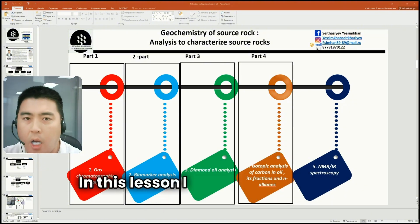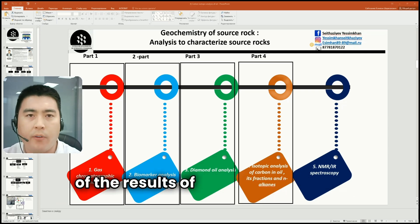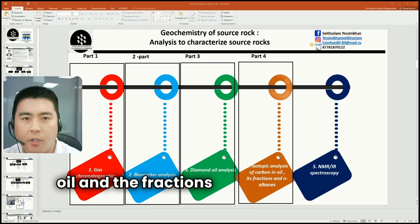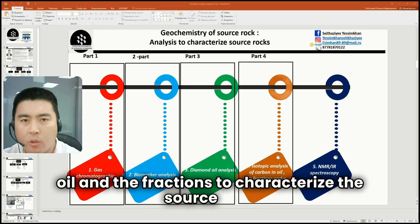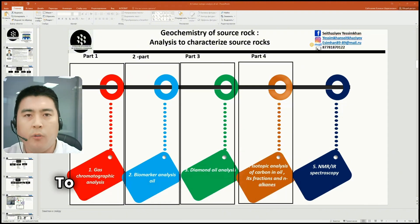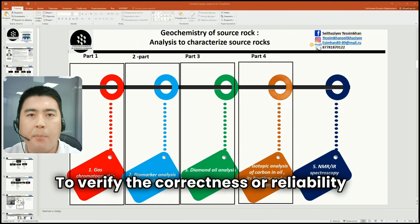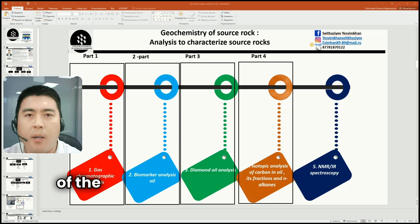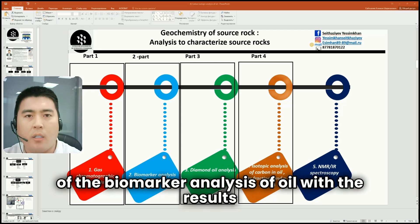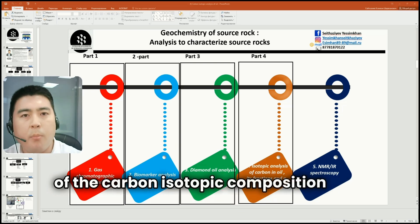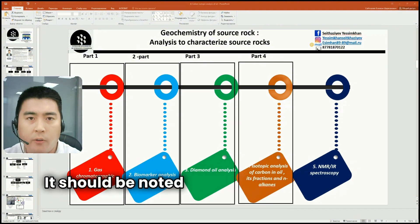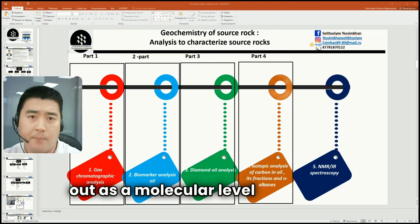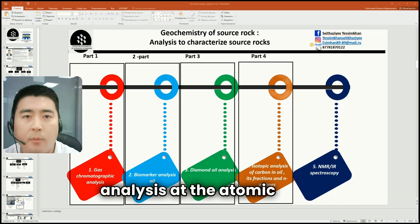In this lesson, I will explain the application of the results of the carbon isotope composition of oil and fractions to characterize the source rock in which the oil is generated. To verify the correctness or reliability of the conclusions obtained, it is necessary to compare the results of the biomarker analysis of oil with the results of the carbon isotope composition of oil and their fractions. It should be noted that biomarker analysis is carried out at the molecular level and isotope analysis at the atomic level.